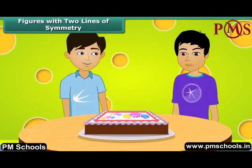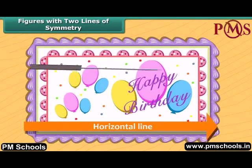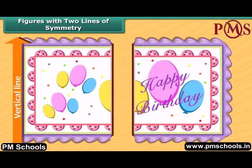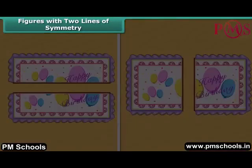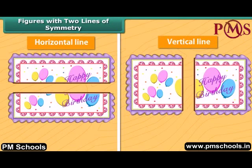Manu and Mrinal have one rectangular cake. Each of them wants an exact half of it. The cake can be divided in two ways to give equal halves. The cake can be divided along the horizontal line so that its two halves match each other. It can also be divided along the vertical line. So the cake has two lines of symmetry along which it can be divided to give two identical halves.